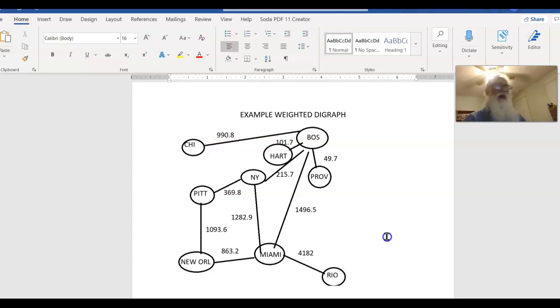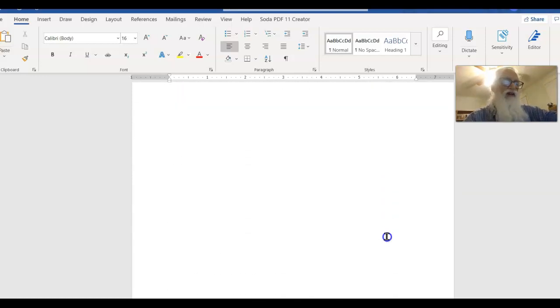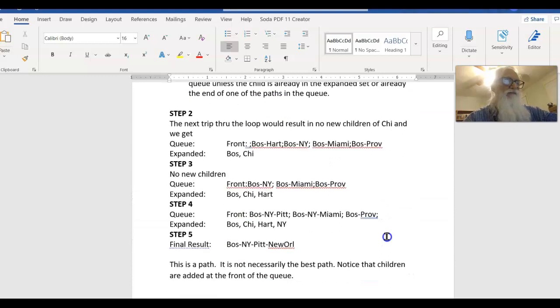Breadth first says don't go down, go across. So start with Boston-Chicago, then Boston-Hartford, then Boston-New York, then Boston-Miami, then Boston-Providence. And now, look at the children of Chicago, the children of Hartford, the children of New York, the children of Miami, the children of Providence. And then go to the grandchildren and keep going like that. The only difference in the algorithm is where you put the new children in the queue - nothing else.